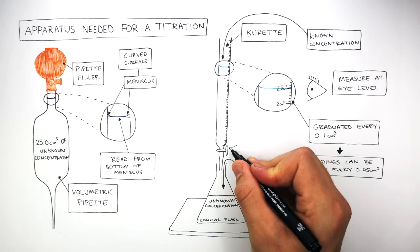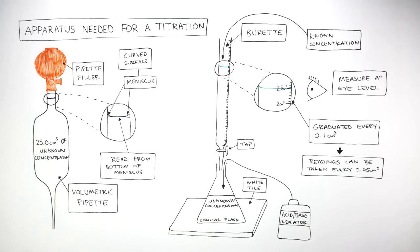And finally it's the tap which is slowly opened each time to release a small volume of acid, swirling the conical flask each time.